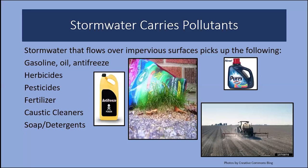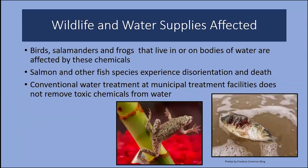That stormwater runoff picks up anything it meets along its journey: gasoline, oil, antifreeze, herbicides, pesticides, fertilizer, caustic cleaners, soap, and other detergents that all enter our waterways. Birds, salamanders, frogs, fish — all of them suffer from the effects of chemicals in that water. Conventional water treatment at municipal treatment plants does not remove toxic chemicals from the water. We all need clean drinking water from our rivers, so it's important to prevent the entry of toxic materials into our waterways.